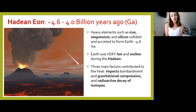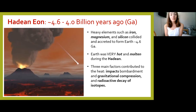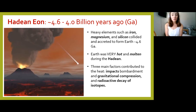Basically, Earth formed because heavy elements such as iron, magnesium, and silicon collided and accreted to form Earth around 4.6 billion years ago. If you want more information about how this occurred, as well as how other planets in the Solar System formed, you can watch my Origin of the Solar System and the Moon video. Once Earth formed, it was very hot and molten during the Hadean, due to three main contributors of heat: heavy bombardment, gravitational compression from formation, and radioactive decay of isotopes.